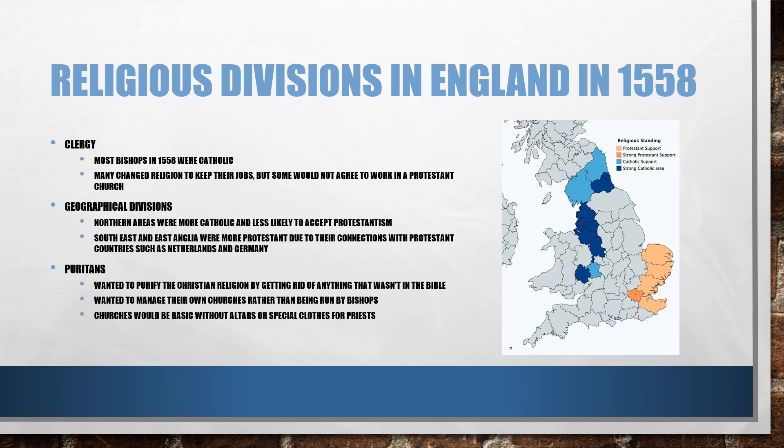We also have to consider the Puritans, which we'll cover in more detail in part three. As a summary, the Puritans wanted to purify the Christian religion by getting rid of anything that wasn't in the Bible. They wanted to manage their own churches rather than be run by bishops and dioceses, and the idea of making churches and services very basic without such equipment like altars or special clothes for priests.